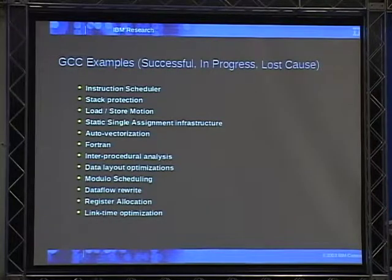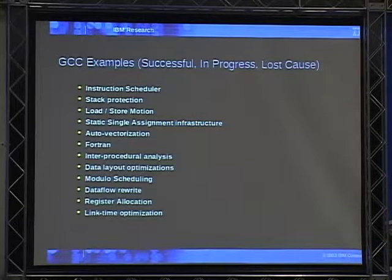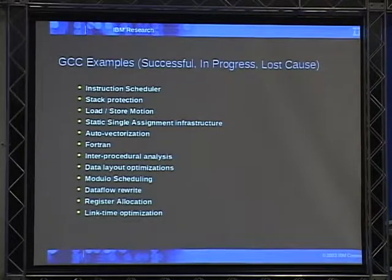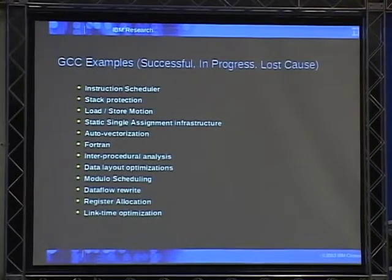To sum up, examples where this approach worked in GCC include the instruction scheduler contributed by IBM very early on, auto vectorization, and work on Fortran. IBM, HP, Sun, Intel, and ARM all became involved in GCC and collaborated with the community — ARM is doing a lot of work now with the Linaro project. There are ways to become involved and collaborate with the community so that a company succeeds at its purposes without creating conflict. This is how we found to collaborate with an open source community and achieve goals both parties are genuinely interested in. Thank you.